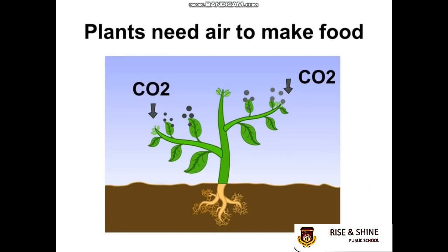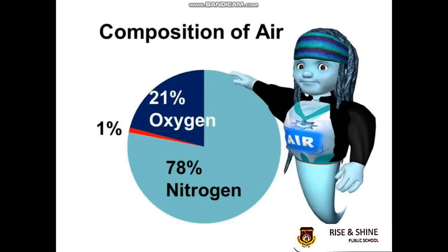So what gases are present in the air? Mainly there are three types of gases: Nitrogen, Oxygen, and Carbon dioxide. Nitrogen is the largest amount, that is 78%. Oxygen is 21%. Carbon dioxide is even less than 1%. Although the percentage of carbon dioxide is very less, it is important for the living world as plants use it for making food.